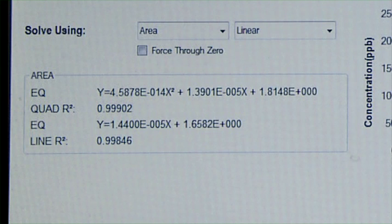The correlation of fit for a linear equation should be at least .995 for best quantitative results. A quadratic fit option is also available in Elvin.